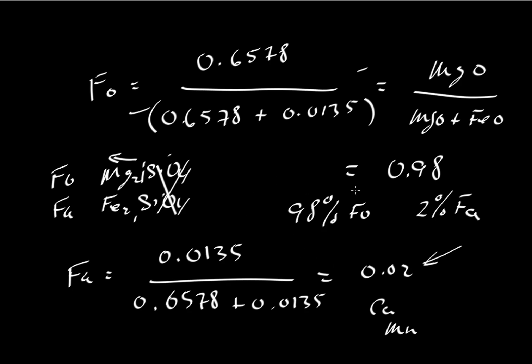Anyway, how do we write this? Just to finish this up, if we have something that is 98% forsterite, the way we usually write that is Fo subscript 98. Or you could write it equivalently. This would be equal to Fa2, something that is 2% fayalite. It could be written like that, and that would be the same thing if we only have two components here.